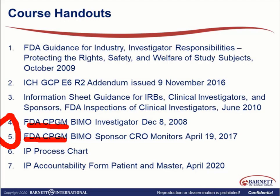Sometimes we don't always understand what the regulations mean, so some of these guidance documents are helpful. In particular, we're looking at the responsibility of the investigator, also the ICH GCP R2 addendum — what it states about investigational product accountability — and then some processes we'll look at here, and also what they look for if there would be an inspection of the clinical investigator.